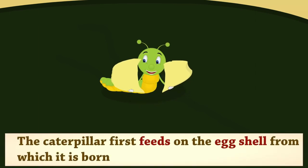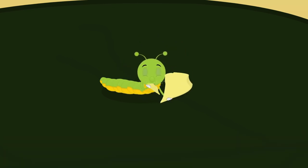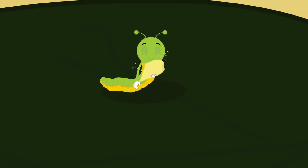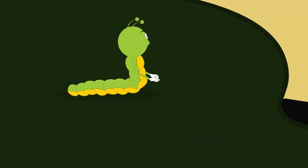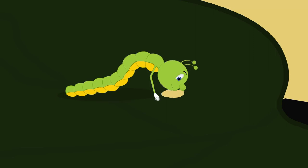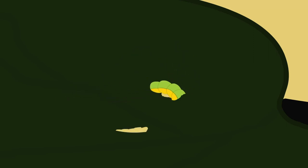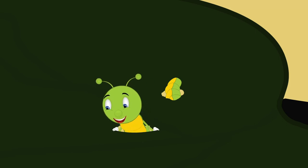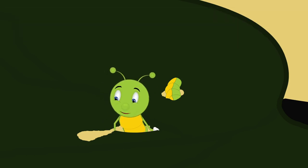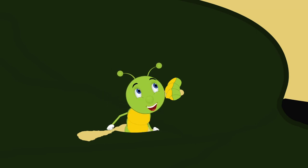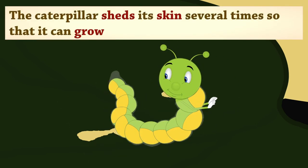The caterpillar first feeds on the eggshell from which it is born. It then starts feeding on the leaves and starts to grow. The caterpillar sheds its skin several times so that it can grow.